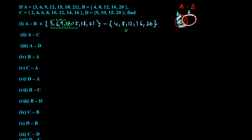15 — yes, we will take it. 18 is not in B, so we will take it. 21 — yes, we will take it. So what we get is {3, 6, 9, 15, 18, 21}. This is A difference B — found in A but not in B.